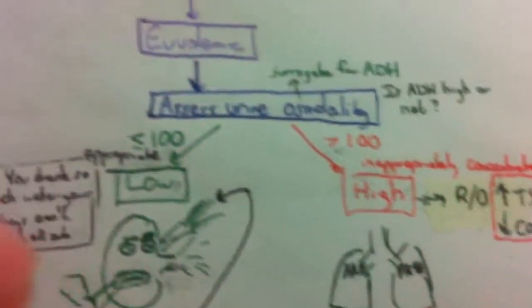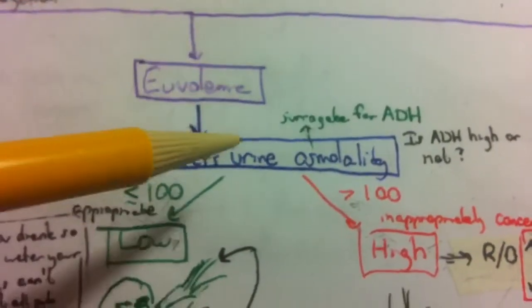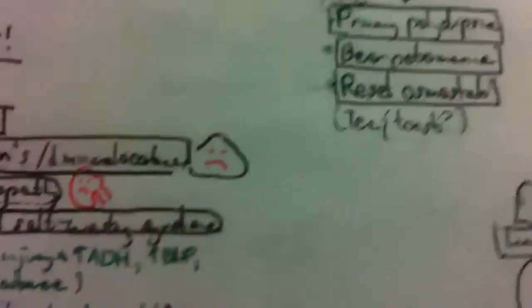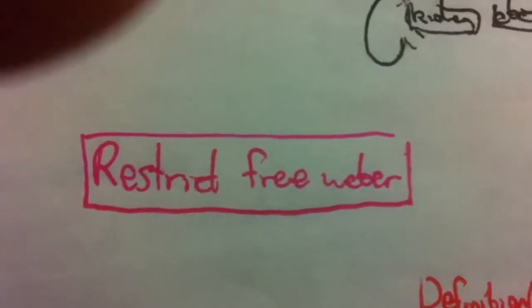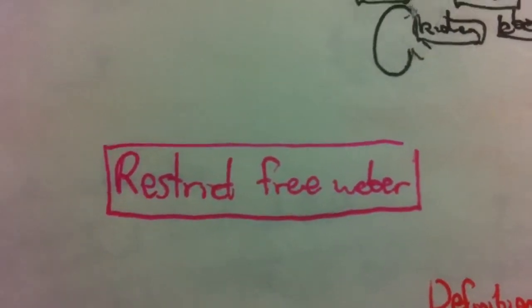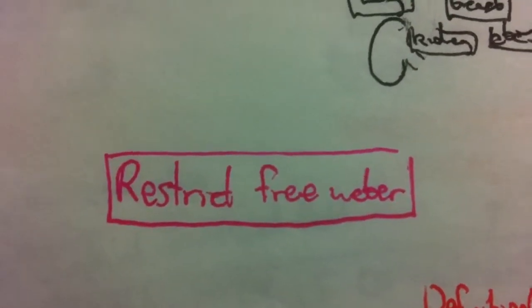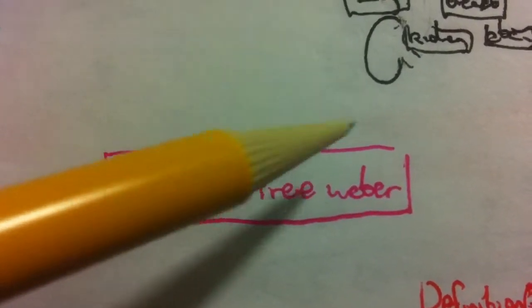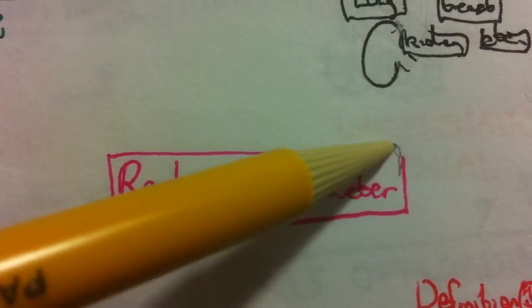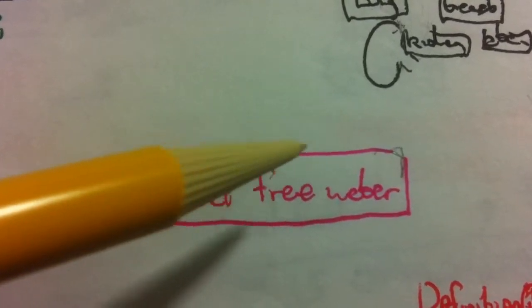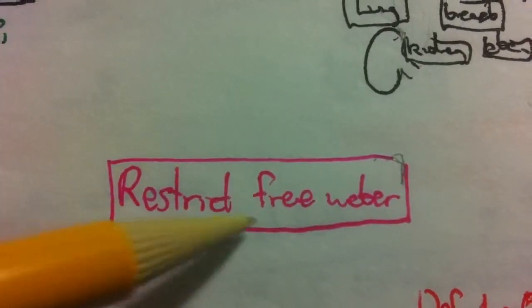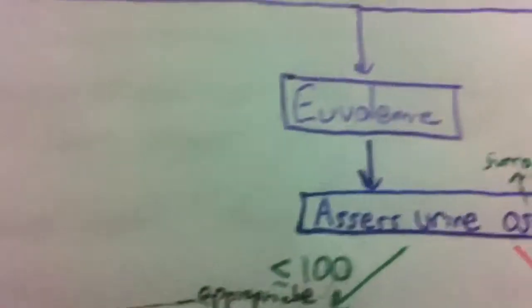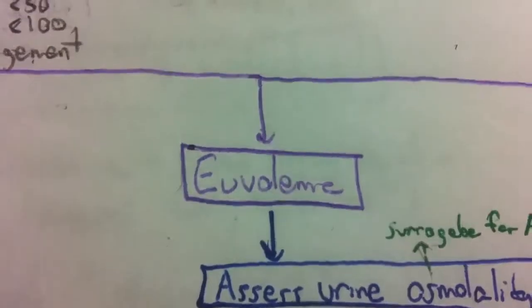The treatment for euvolemic hyponatremia, regardless of whether it's low ADH or high ADH, is to restrict free water. That makes sense. So even if there's a lot of ADH around, if you don't have free water around for it to work on, then it's not going to be able to absorb as much free water, and as a consequence the plasma will be less diluted, sodium will rise up appropriately. All right, so we've got one more to go. That was euvolemic, and then hypervolemic.